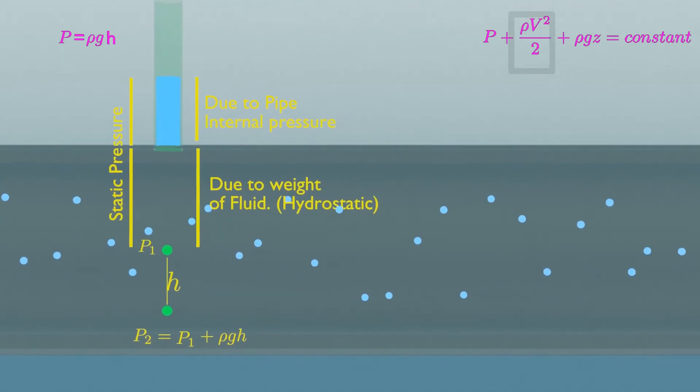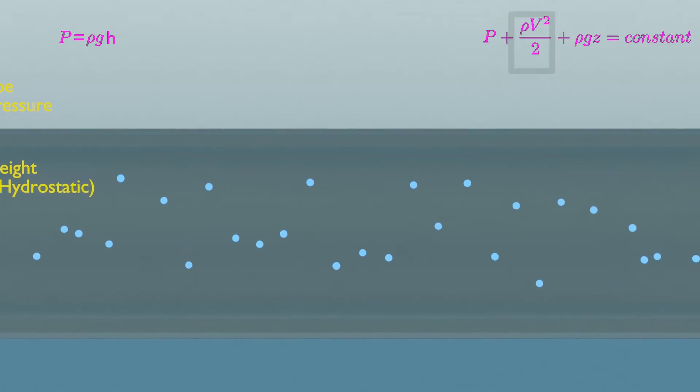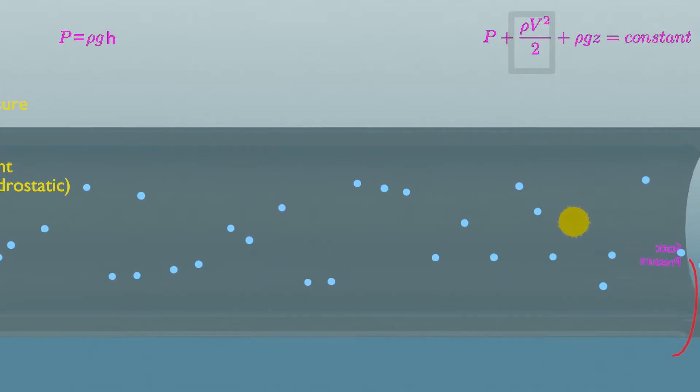There is another one called dynamic pressure. If you put a ball on ideal moving fluid, and if the ball has the same velocity of the fluid, then the ball shall experience static pressure only.